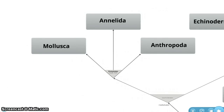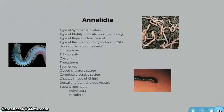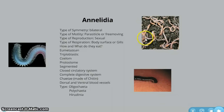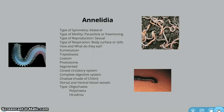The next protostome we'll look at is phylum Annelida. Phylum Annelida has bilateral symmetry. They are also parasitic or free-moving. They reproduce sexually and can breathe through their body surface or through gills, depending on the type of animal. Some of them, like a leech, eat blood; others eat minerals from the earth and things that have decomposed. They are eumetazoan, meaning they have a digestive system. They are triploblastic, they have a true coelom, and they are protostome. They are segmented — the first we've come across — which means they have distinct body parts, and it allows them to move more easily and fluidly.